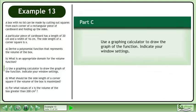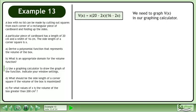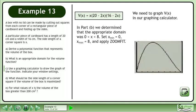Now we'll move on to Part C. Use a graphing calculator to draw the graph of the function. Indicate your window settings. We need to graph V in our graphing calculator. In Part B, we determined that the appropriate domain was 0 < x < 8. Set x_min = 0, x_max = 8, and apply ZoomFit.